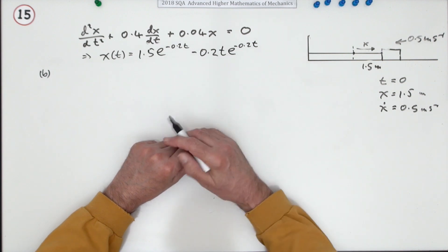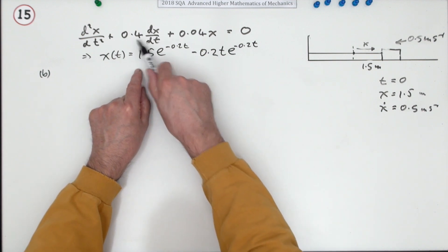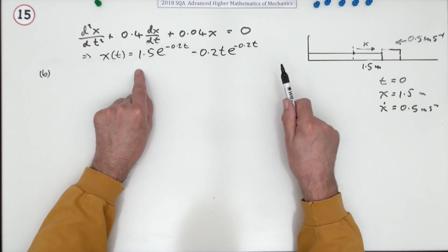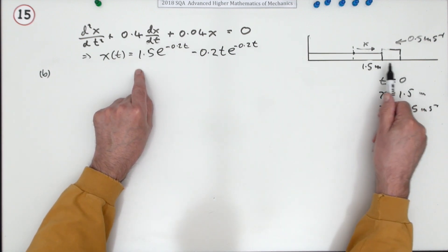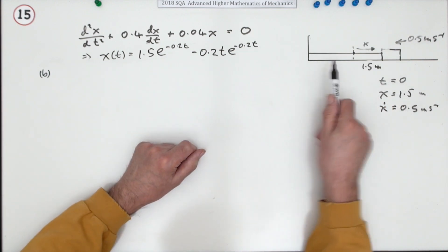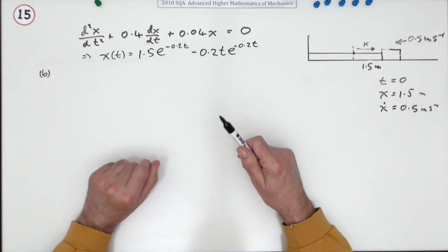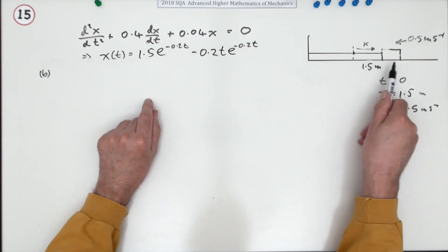That solution to that differential equation shows that there's no oscillatory motion. Notice how there's no sine or cosine terms, there's no sinusoidal terms. This is the case where it's called... in fact I can see from these numbers it's actually called critically damped, where it just glides to rest in the shortest possible time.